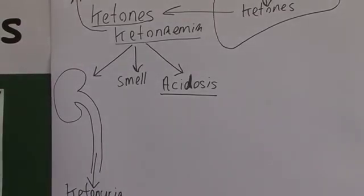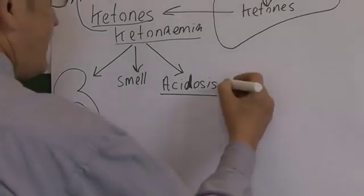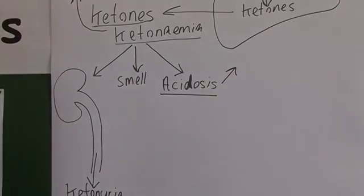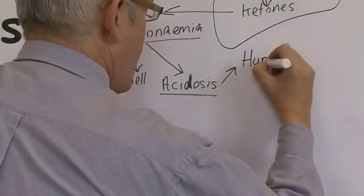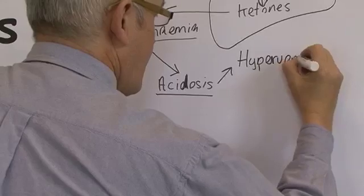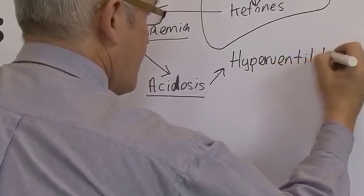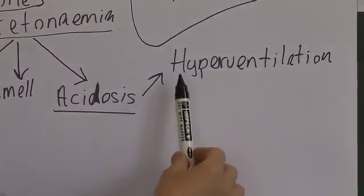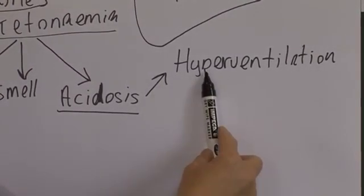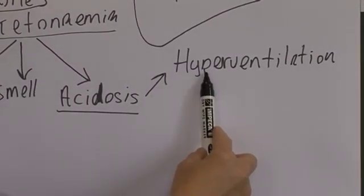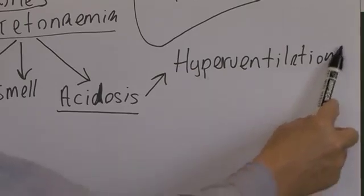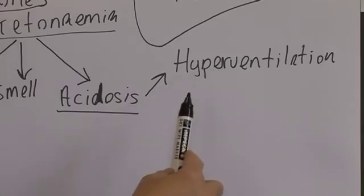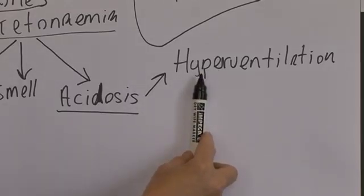Now, what does the acidosis do? Well, the acidosis is detected by the respiratory centre in the medulla oblongata and leads to hyperventilation. There is rapid, deep breathing, as the patient tries to compensate for the acidosis. And again, we can recognise this rapid, deep breathing, this sort of air hunger that we get in acidosis.